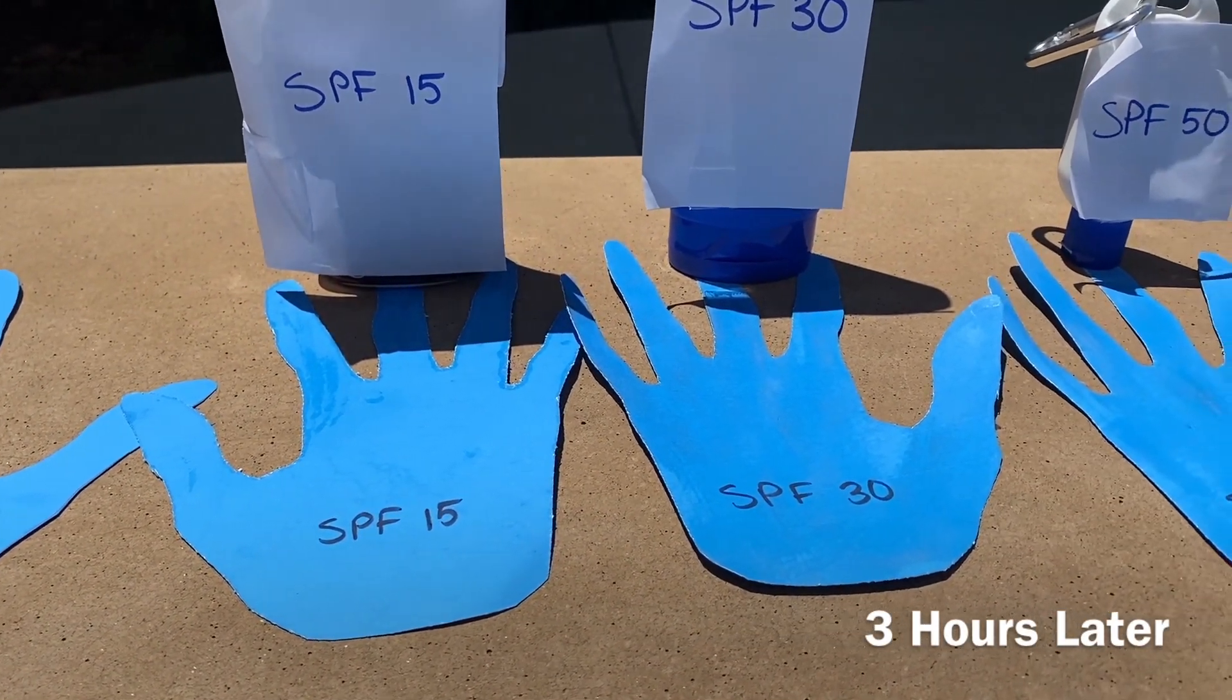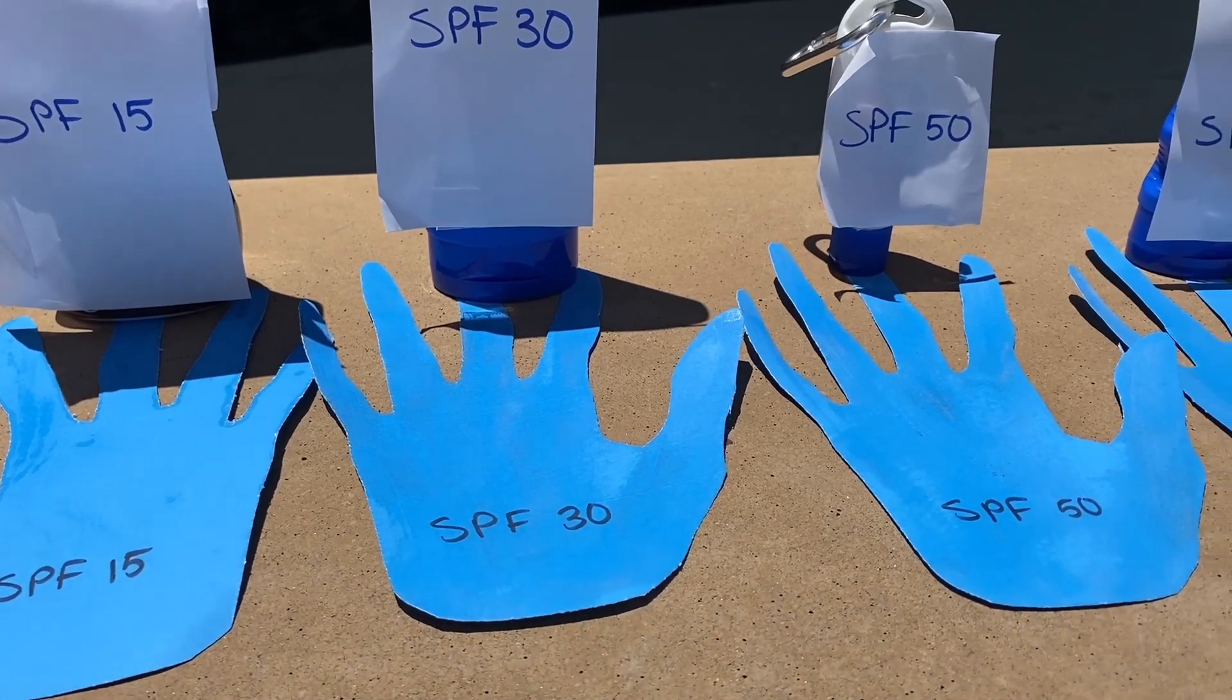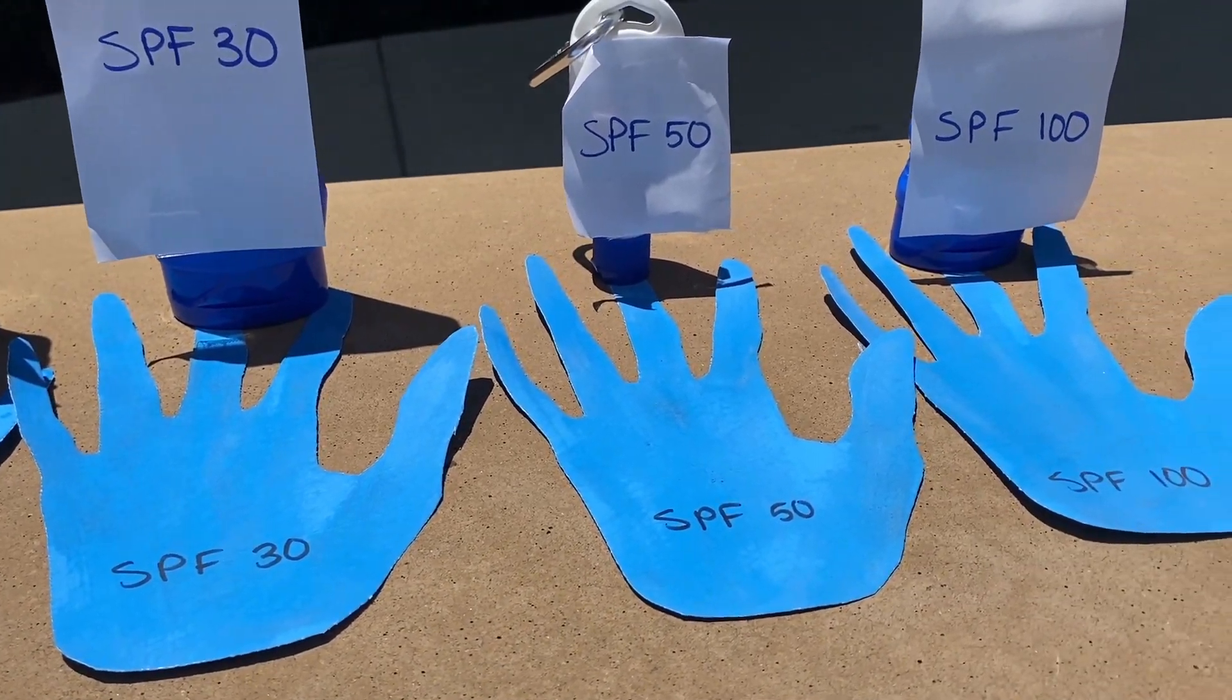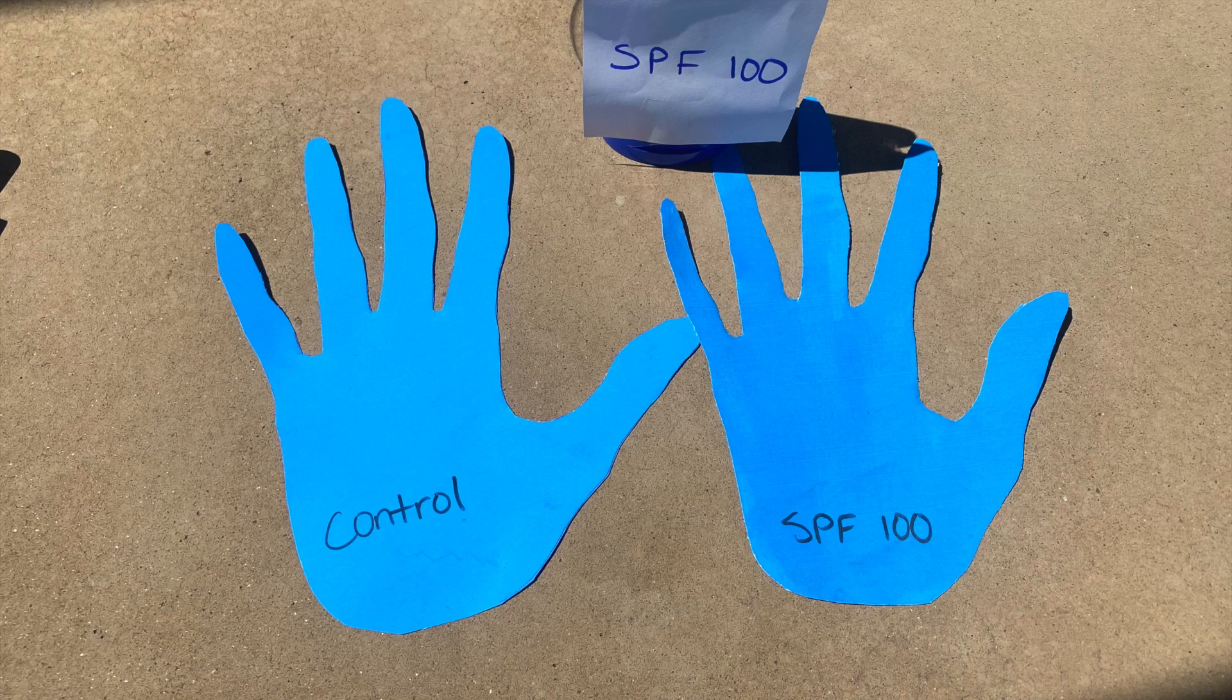Our sunscreen paintings have been out for quite a while. Let's see how they're doing. It appears the higher SPF sunscreen protected our paper the most, while the control got bleached by the sun.